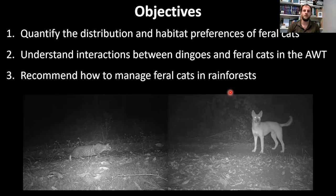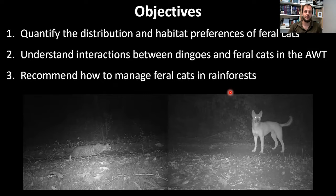This is where my PhD project comes in. It had three broad objectives: to quantify the distribution and habitat preferences of feral cats; to understand whether there is any evidence of feral cats and dingoes interacting; and to recommend how we might manage feral cat populations in rainforests going forward.